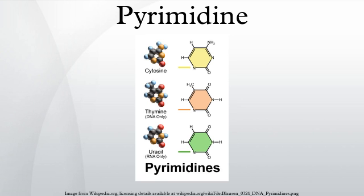Pyrimidines can be prepared via the Biginelli reaction. Many other methods rely on condensation of carbonyls with diimines — for instance, the synthesis of 2-thio-6-methyluracil from thiourea and ethyl acetoacetate, or the synthesis of 4-methylpyrimidine with 4,4-dimethoxy-2-butanone and formamide. A novel method involves reaction of certain amides with carbonitriles under electrophilic activation of the amide with 2-chloropyridine and trifluoromethanesulfonic anhydride.